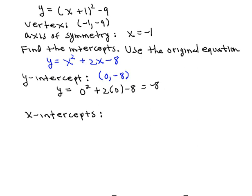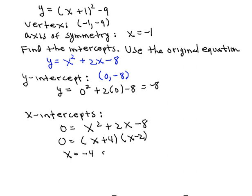So then we can say that the y-intercept will have the coordinates 0, negative 8. And to find the x-intercepts, we'll replace y with 0. So we have 0 equals x squared plus 2x minus 8. We can factor that into x plus 4 times x minus 2, which will produce the x-values of negative 4 or positive 2.